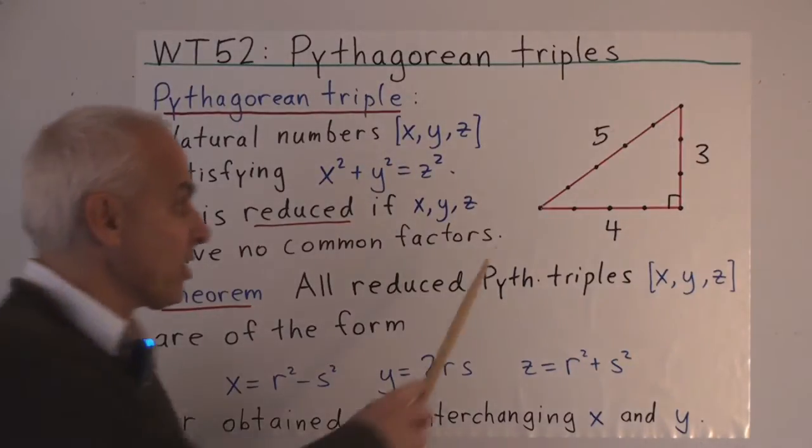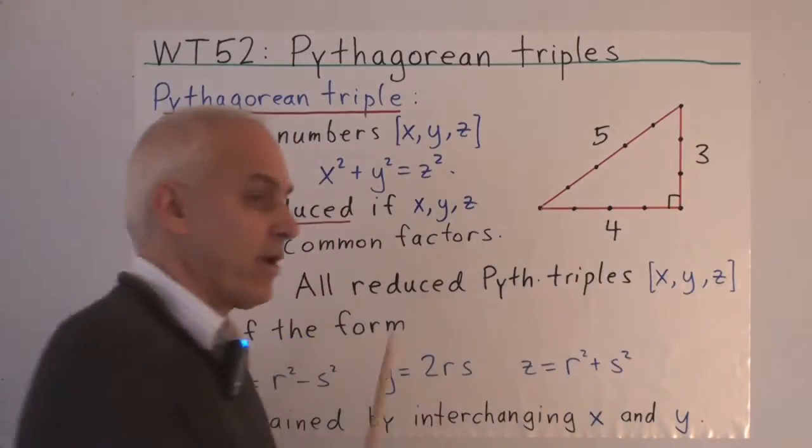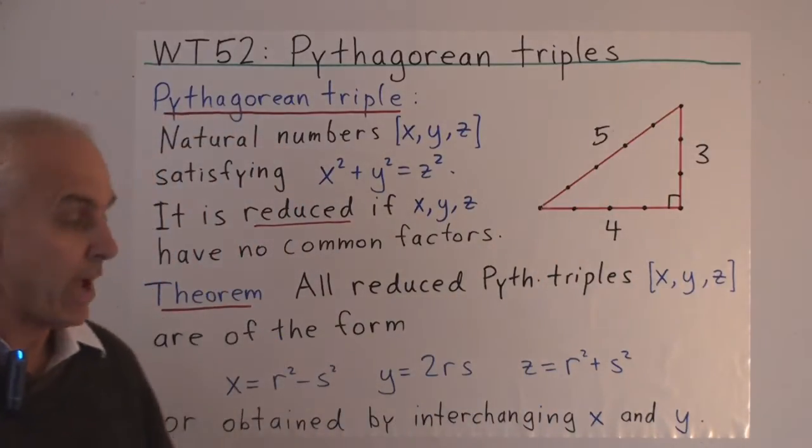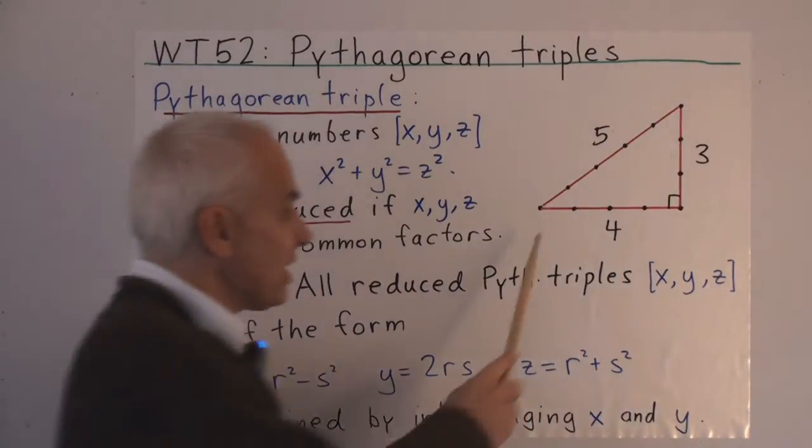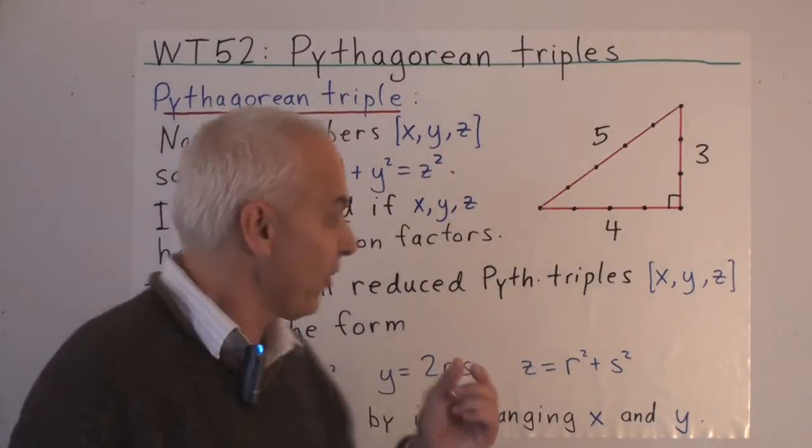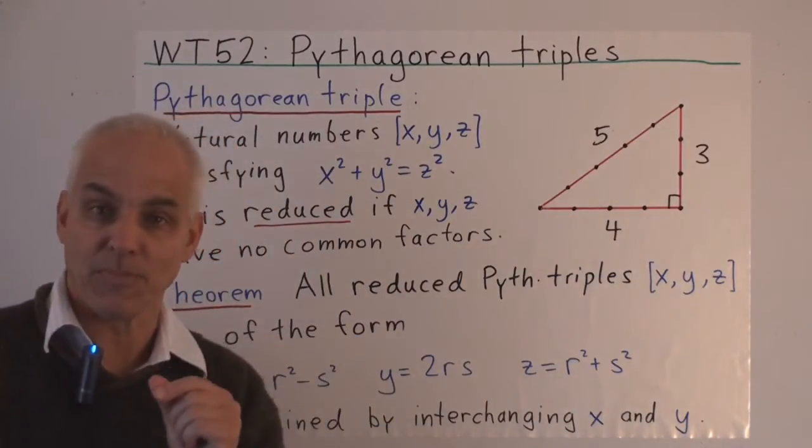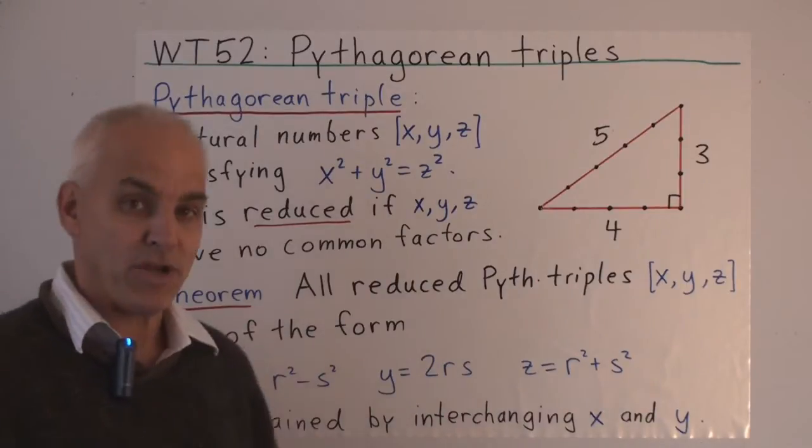A Pythagorean triple is a particular type of right triangle where each of the three sides are commensurable. That means we can choose a certain unit so that each of the three sides is an integer multiple of that one unit.